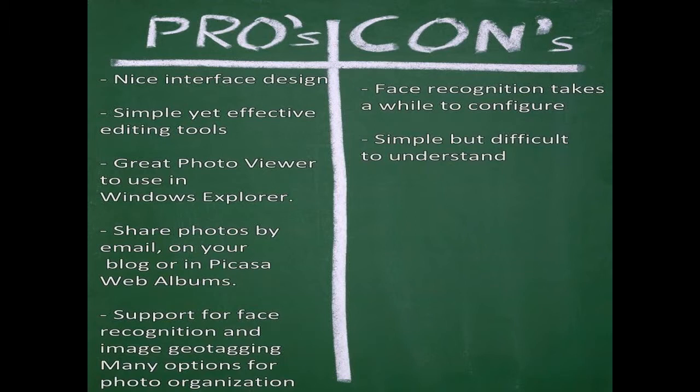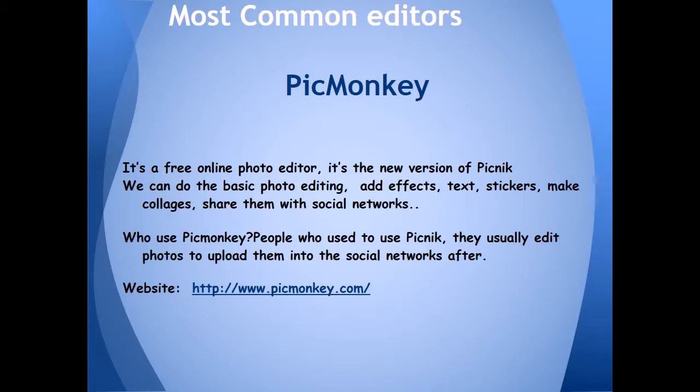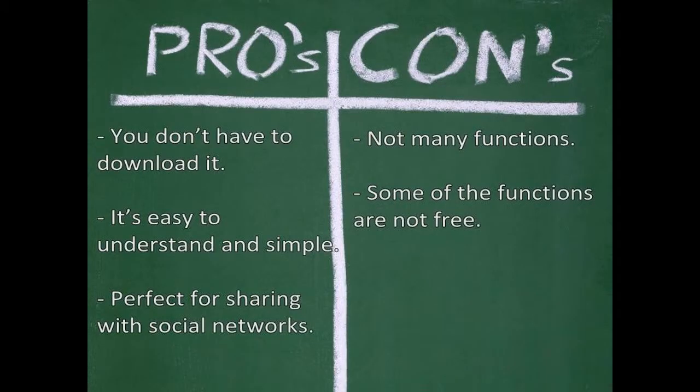Cons: recognition takes a while to configure, and simple but difficult to understand. 2. PicMonkey — it's a free online photo editor, it's the new version of Picnic. Pros: you don't have to download it, it is easy to understand and simple, and perfect for sharing with social networks.